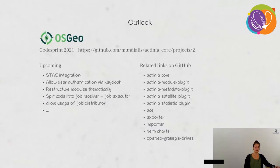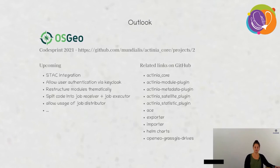The outlook: there is an OSGeo code sprint on Saturday and we're participating with Actinia — please join us if interested. Future plans include STAC integration and moving Actinia authentication out of the core to make it available via other software such as Keycloak. Related projects are linked and available on GitHub.